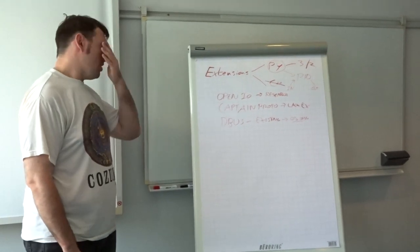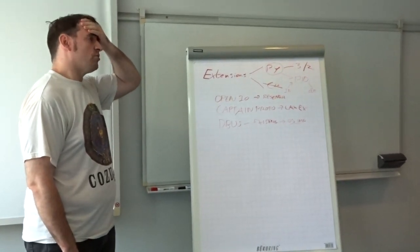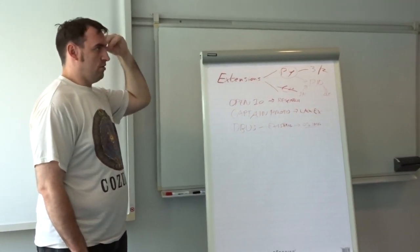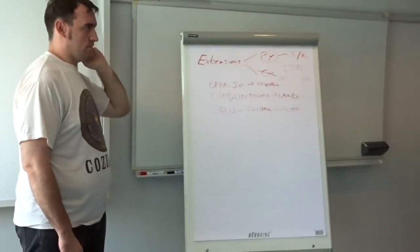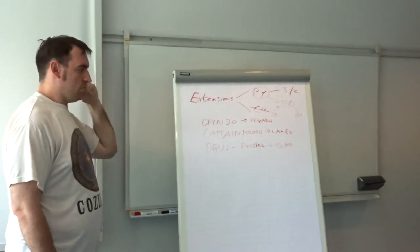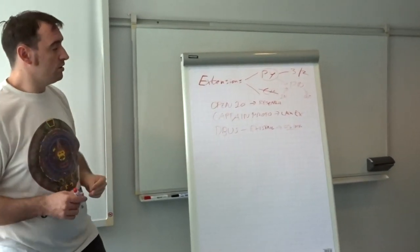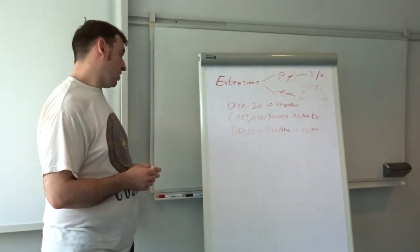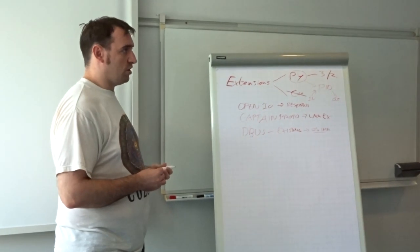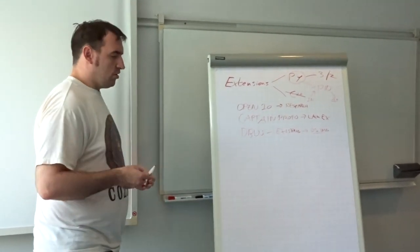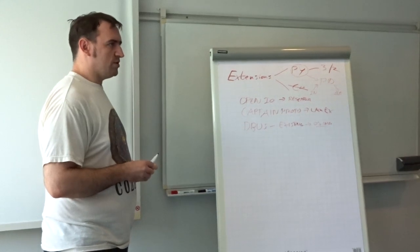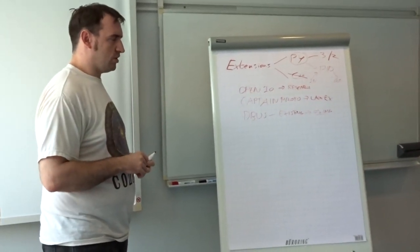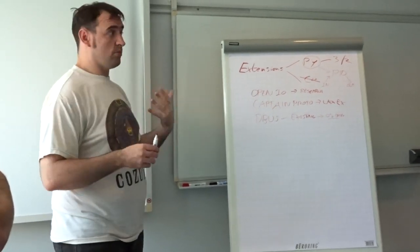D-Bus is a freedesktop.org spec. Does it make sense to take on the burden of shipping, packaging, and maintaining a D-Bus system? It's there and exists so we don't need to code it, but we need to maintain a copy for our packaging. We also need to make sure we're running it with our own namespace so that if somebody else needed D-Bus on Windows, these three are three alternatives.